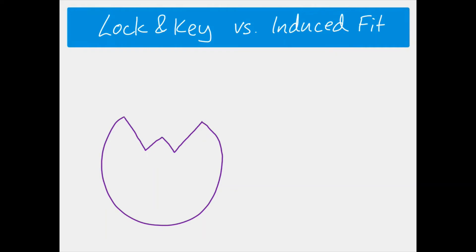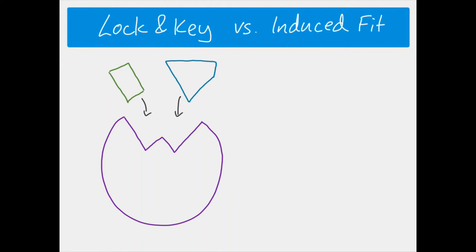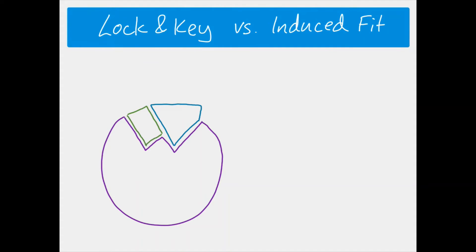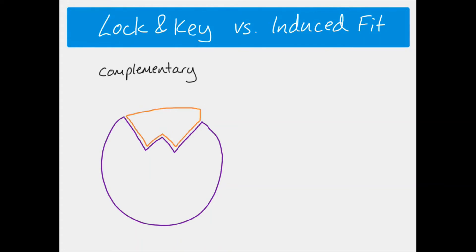There are two different hypotheses for the details of how this works. The first is the lock and key hypothesis. Here we have two substrates which are going to be combined into one product. When they collide with the enzyme and with the active site, you can see that the shape of the substrates is exactly complementary to the shape of the active site, so temporary hydrogen bonds hold them in place. The product is formed and released.